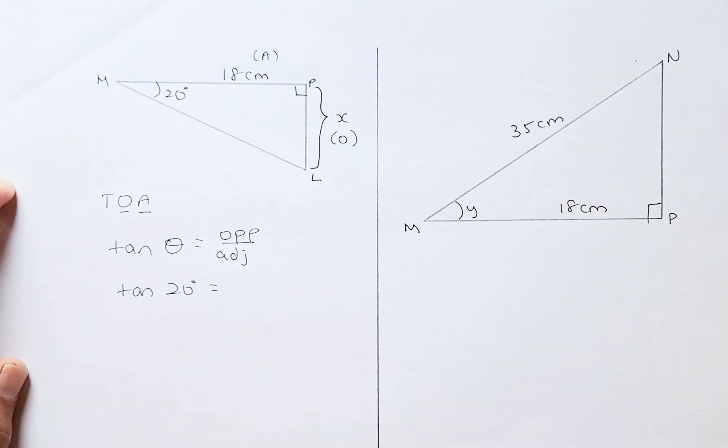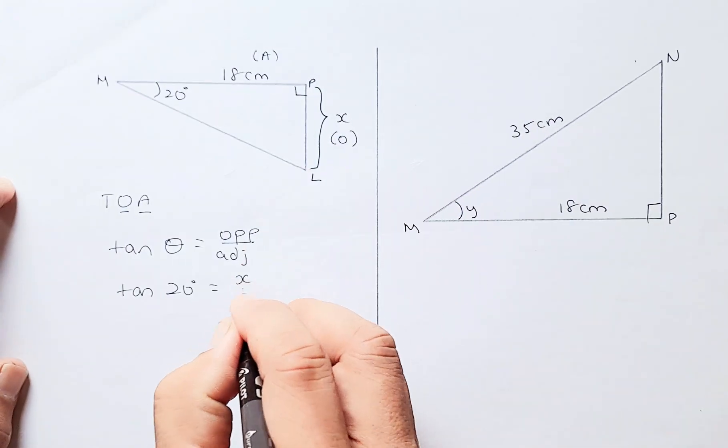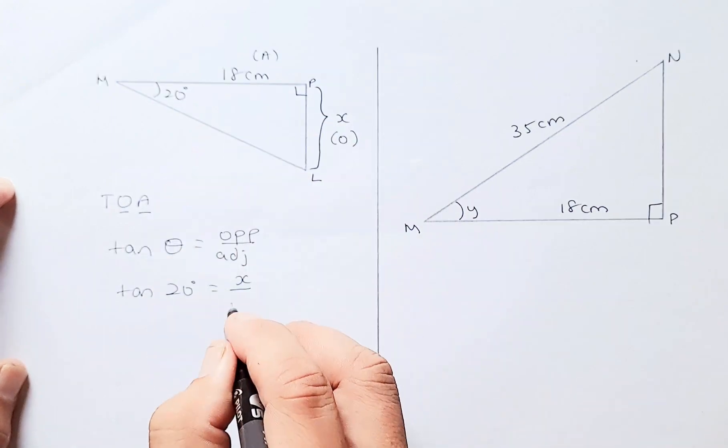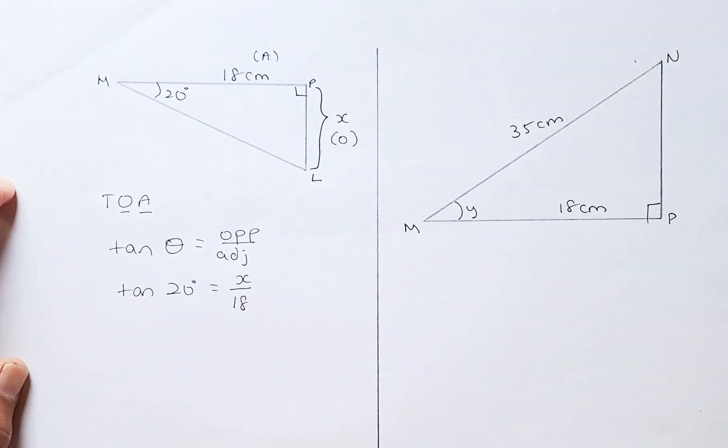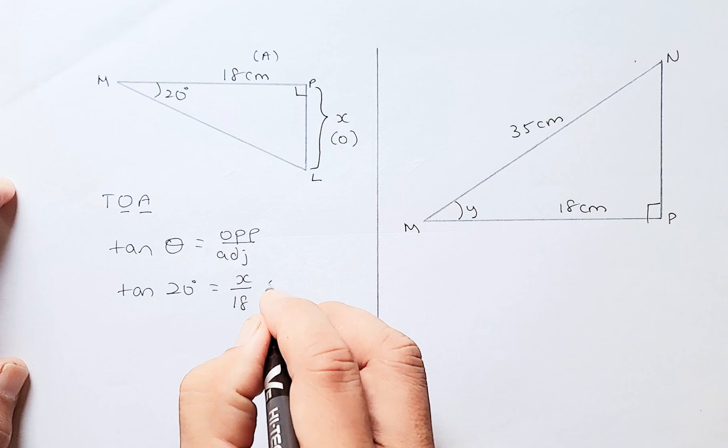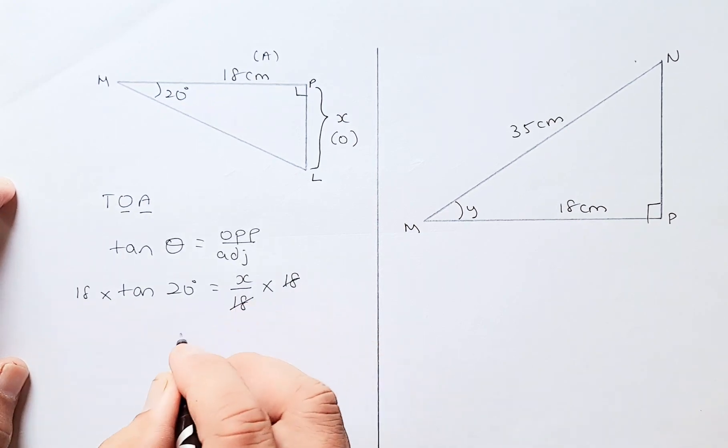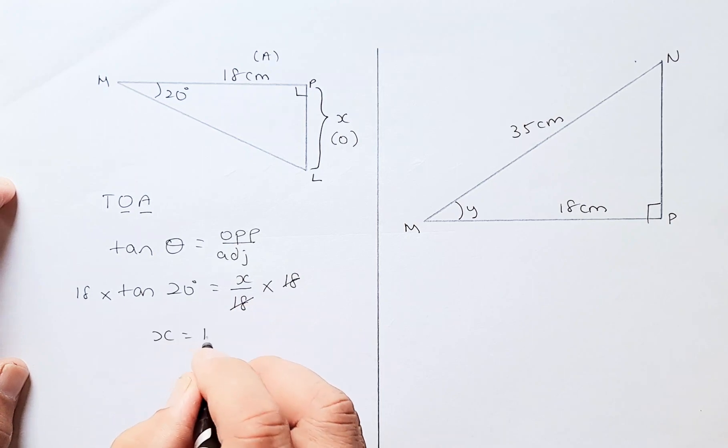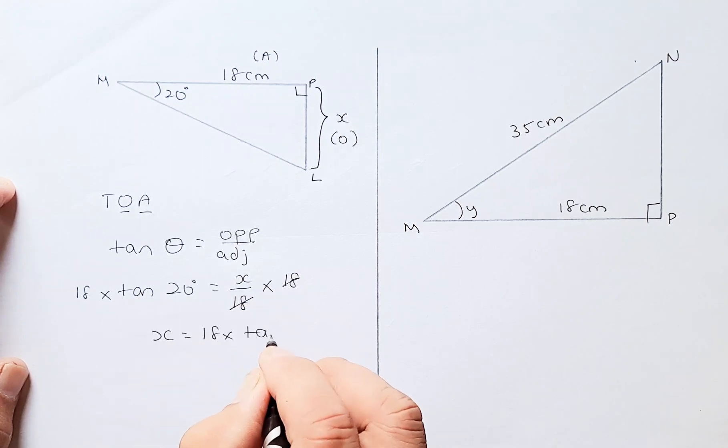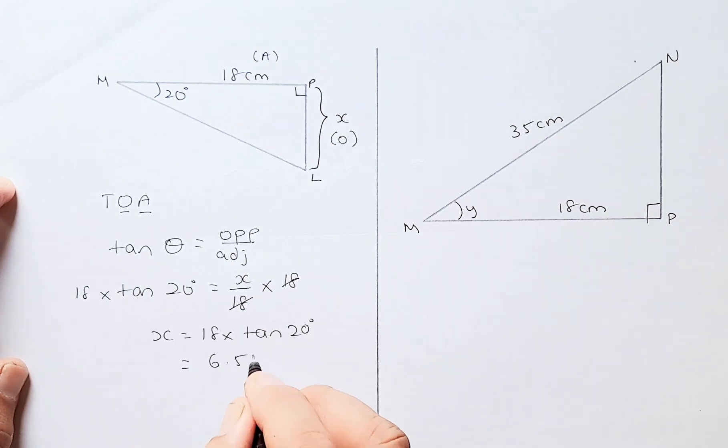Then opposite is X, that's what we're going to find, and the adjacent is 18. To solve for X, you just need to multiply both sides by 18. When you multiply by 18, your 18 will cancel out, so X equals 18 times tangent 20. The last step, you put in your calculator, and the answer is 6.55 cm. That will give you an achieve in the geometric reasoning paper.